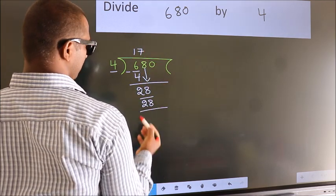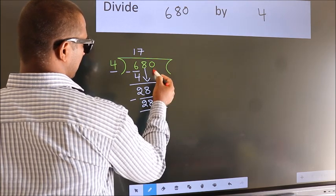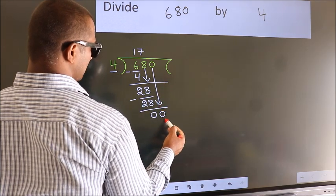Now, we subtract. We get 0. After this, bring down the beside number. So, 0 down. So, 0.